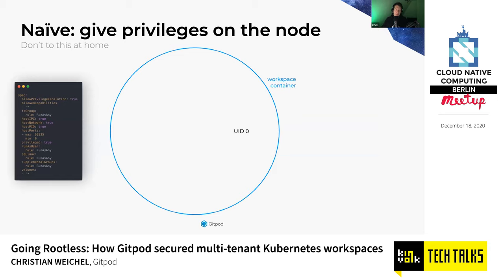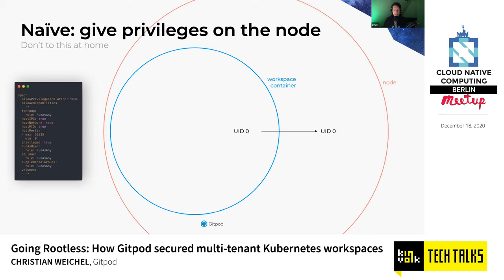So how do we make this work? The most naive possible way is simply running those workspace pods as UID zero and giving all the privileges. But clearly this is not a good option, because naturally it would mean you would actually be UID zero on the node, and you would have privileges far beyond what you should have on a virtual machine shared with, say, 25 other users.